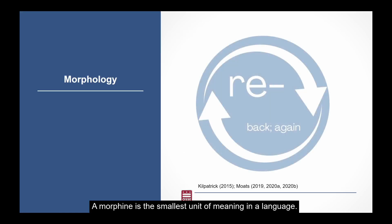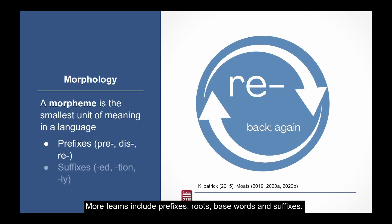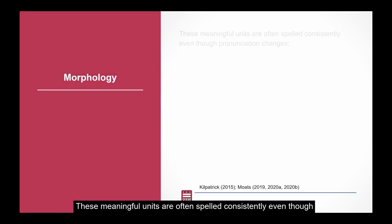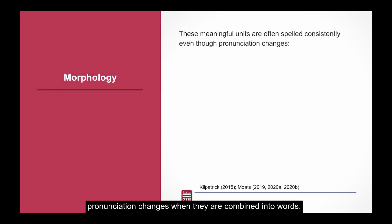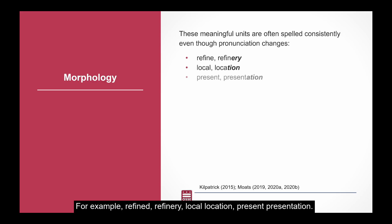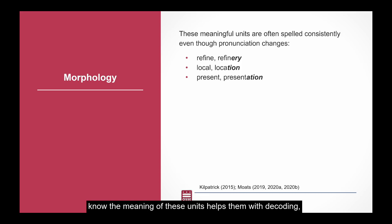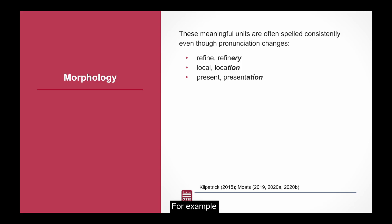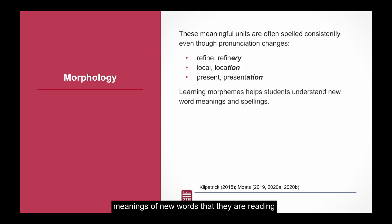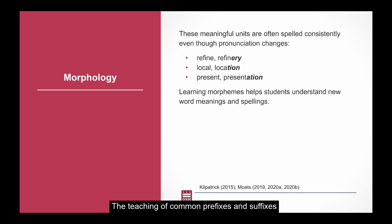A morpheme is the smallest unit of meaning in a language. Morphemes include prefixes, roots, base words, and suffixes. These meaningful units are often spelled consistently, even though pronunciation changes when they are combined into words — for example, 'refined/refinery,' 'local/location,' 'present/presentation.' Teaching students with dyslexia to recognize word parts and know the meaning of these units helps them with decoding, building vocabulary, and becoming more accurate and efficient readers. For example, learning morphemes helps students to understand meanings of new words they are reading and also helps them to spell words. In DC, the teaching of common prefixes and suffixes begins in second grade in core instruction.